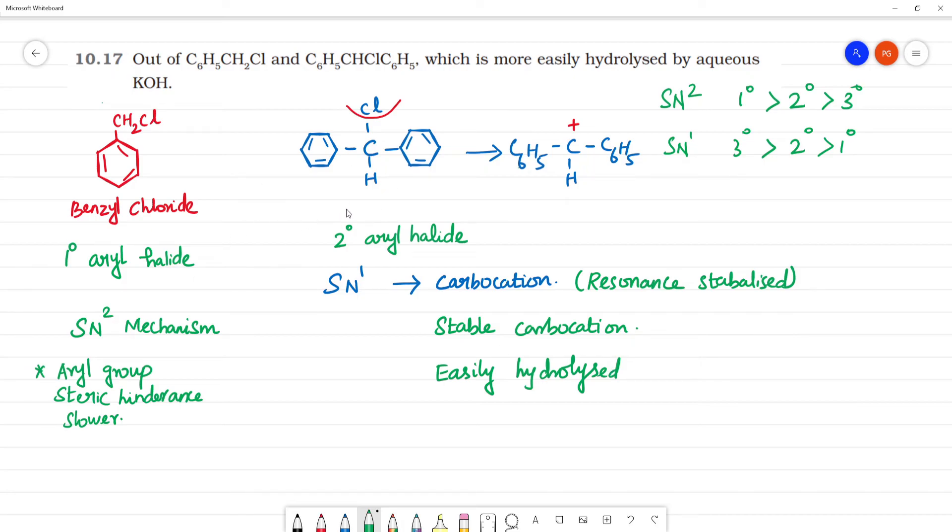Comparatively benzyl chloride - what is this second compound? It's chlorodiphenyl methane. One carbon present, so methane. This chlorodiphenyl methane is easily hydrolyzed.